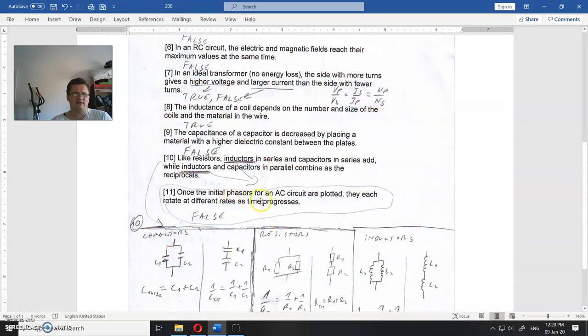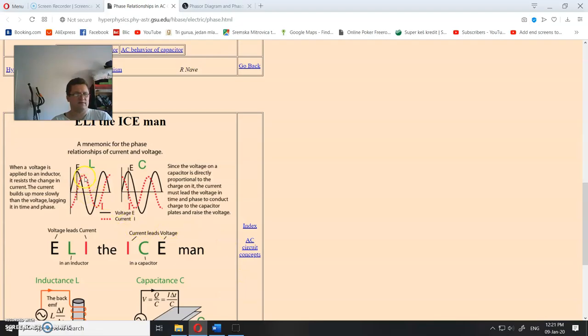Once the initial phasors for an AC circuit are plotted, they each rotate at different rates as time progress. This is false. Once you plot these phasors, they rotate one in front of each other, one in front of another, but the period of the rotation is the same, so they do not rotate in a different time. So as you can see here, distance from this point to this point is equal to this, distance from this point to this point. So it's the same period.